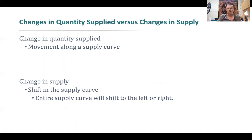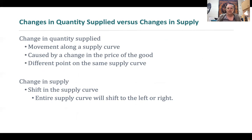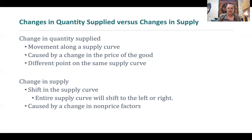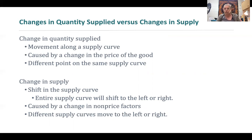We're going to use the same language here to distinguish between movement along a supply curve — which is a change in quantity supplied when we move from one point to another — versus a change in supply, which is a shift of the entire curve to the left or the right. Changes in quantity supplied are the direct result of a change in the price of the good itself. A change in supply is caused by non-price factors, moving the curve to the right indicating an increase, or to the left indicating a decrease.